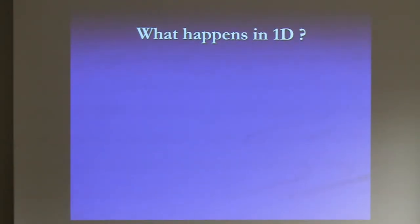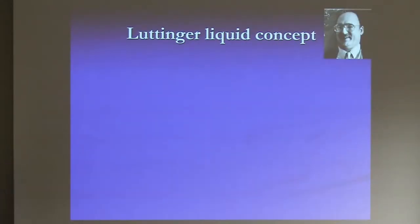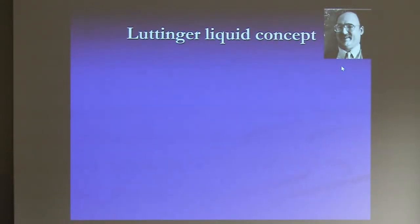What happens in 1D? If I had to give a 101 crash course on 1D physics — what is different between 1D and 3D fermions? In 1D, you have only collective excitations. Duncan Haldane, who received the Nobel Prize for other things but could have also gotten it for this, showed that there is in one dimension a universal concept — the equivalent of Fermi liquid theory in higher dimensions — which he called the Tomonaga-Luttinger liquid concept.